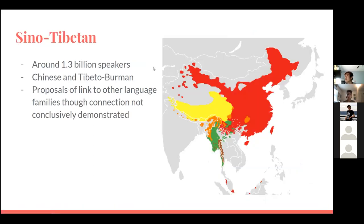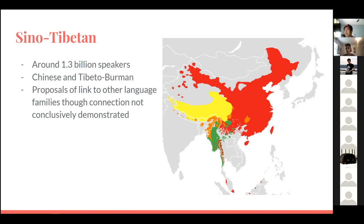Sino-Tibetan is perhaps one of the biggest language families in terms of number of speakers, right behind Indo-European, with around 1.3 billion speakers. It mainly has two branches: Chinese — with the Sinitic languages — and Tibeto-Burman. There were proposals linking it to other language families, though these connections were not conclusively demonstrated. Some people have argued that it has links to Kra-Dai, Hmong-Mien, and others, but these have not been properly substantiated to be universally agreed upon by the linguistic community.